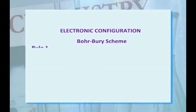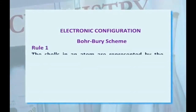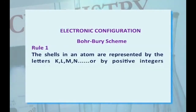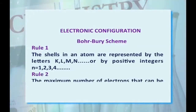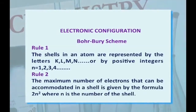Electronic configuration is followed by a scheme called the Bohr-Bury scheme. According to this rule, the shells in an atom are represented by the letters K, L, M, N or by positive integers n = 1, 2, 3, 4, representing the shell number. Rule 2: the maximum number of electrons that can be accommodated in a shell is given by the formula 2n², where n is the shell number.